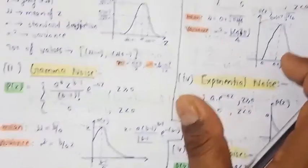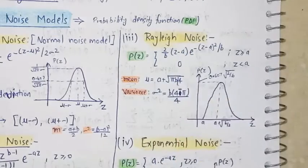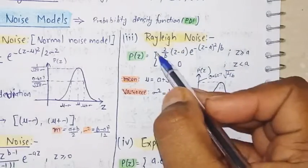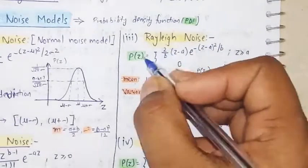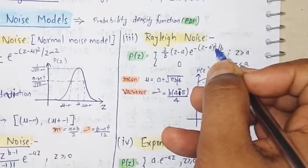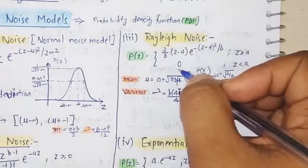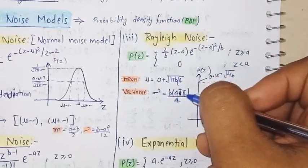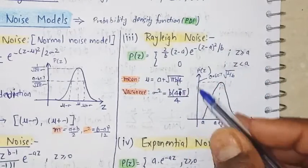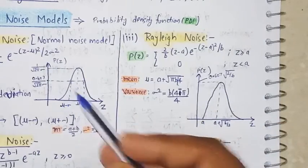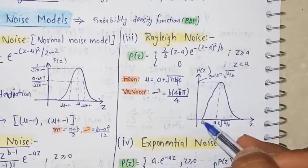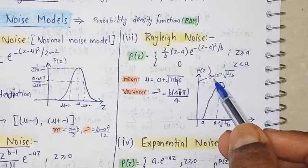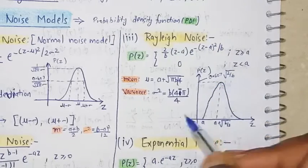The third noise model is the Rayleigh noise model. p(z) = (2/b)(z − a) · e^(−(z−a)² / b) when z ≥ a, and 0 when z < a. The mean value is a + √(πb/4) and the variance σ² = b(4 − π)/4. The diagram rises steeply from a, peaks at a + √(b/2), where the peak p(z) value is 0.607 · √(2/b).